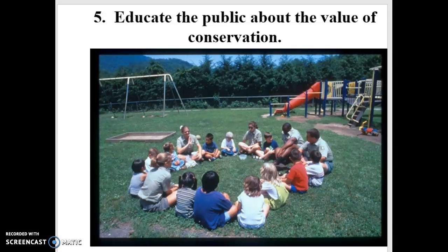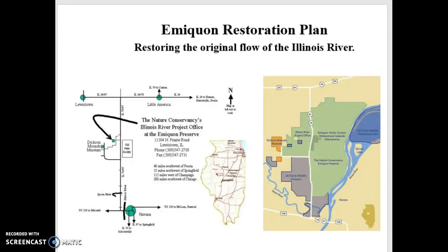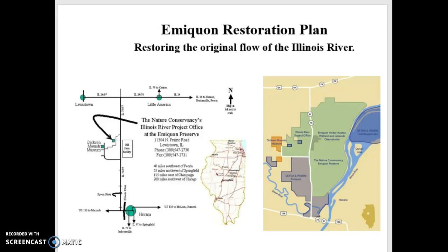There is an absolutely phenomenal conservation plan going on at Emoquon, up near Havana — officially addressed in Lewiston, Illinois. The Nature Conservancy, U.S. Fish and Wildlife, and the University of Illinois Springfield are working up there. What they've been doing is restoring the natural floodplain of the Illinois River. Decades ago, that river was redirected and altered to create farmland, and they started seeing major ecological problems. About 10 years ago, they started re-channeling the river back to its original channel, allowing it to flood out into those areas that are natural floodplains.